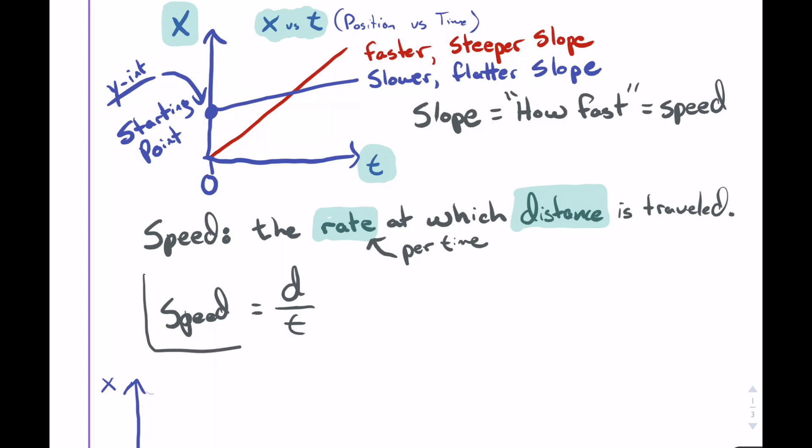What we've already really done here is we've just taken a look at the slope from a position versus time graph and done the rise over the run, or the distance divided by the time. Let's put that there and put this in a little box.